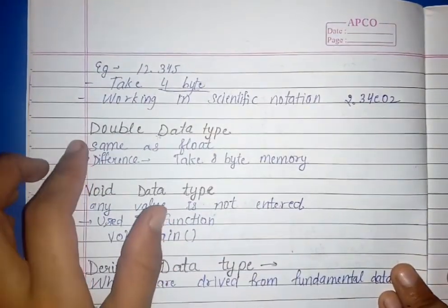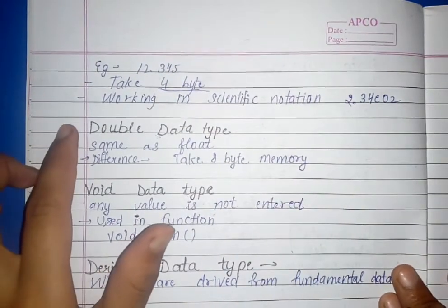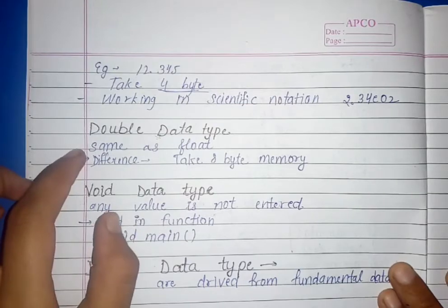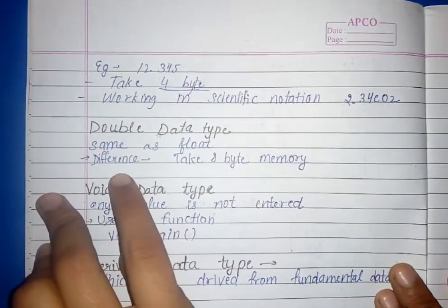Then next fundamental data type, that is double data type. This is also a float. What is the difference? The double data type is 8 byte memory.